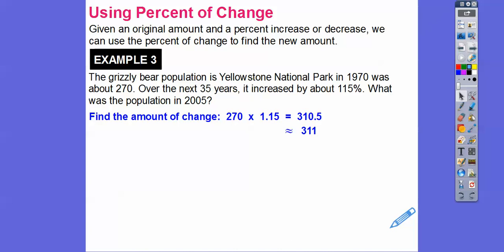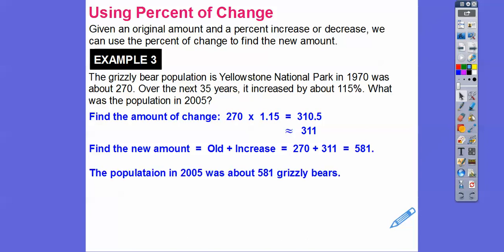So 270 times 1.15 is going to be 310.5. Let's just round it to 311. It would probably be okay if you rounded it to 310. But that's how much it increased. It increased by 311 grizzly bears. So we're going to take the new amount by taking the old number plus the increase, and we get about 581. So the population in 2005 was about 581 grizzly bears.